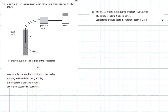The pressure due to a liquid is given by the relationship p equals rho g h, where p is the pressure due to the liquid in pascals, g is the gravitational field strength in newtons per kilogram, rho is the density of the liquid in kilograms per metre cubed, and h is the depth of the liquid in metres.